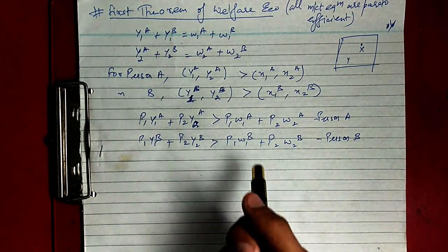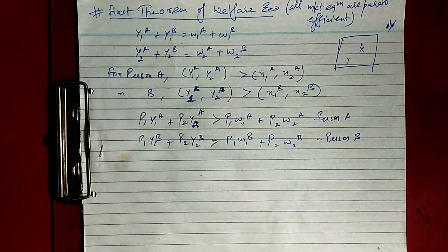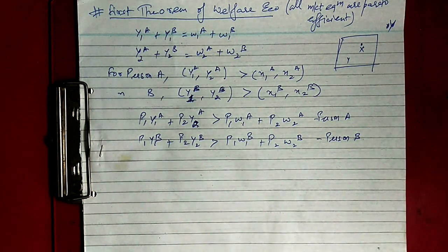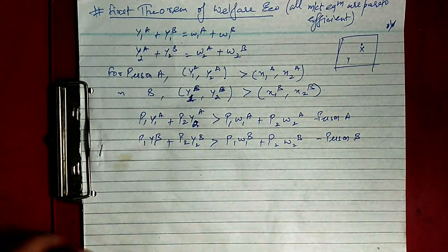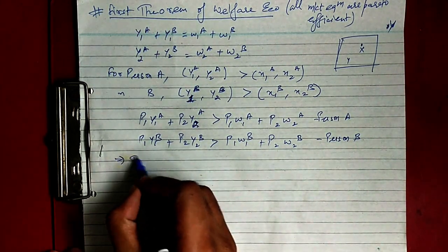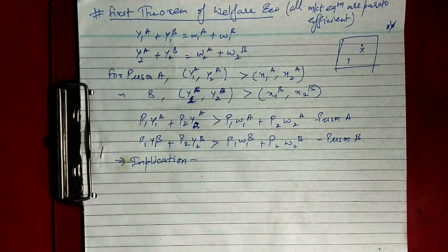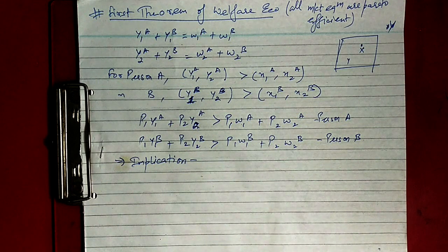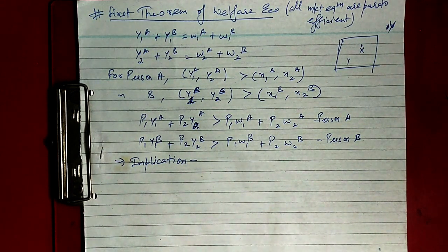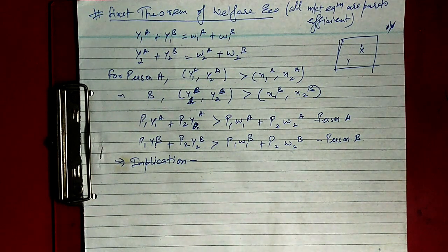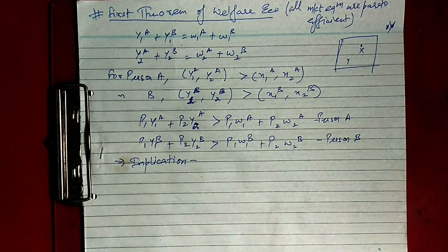Therefore it follows that market equilibrium is Pareto efficient, and the First Theorem is proved. Now we consider the implications of the First Theorem. According to the theorem, all market equilibria are Pareto efficient, although this is not based on any explicit assumption.